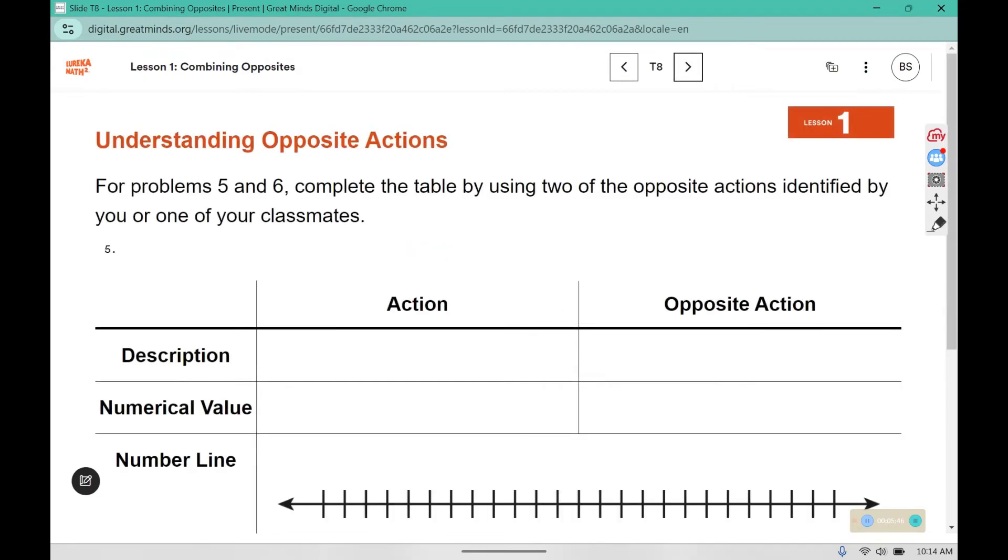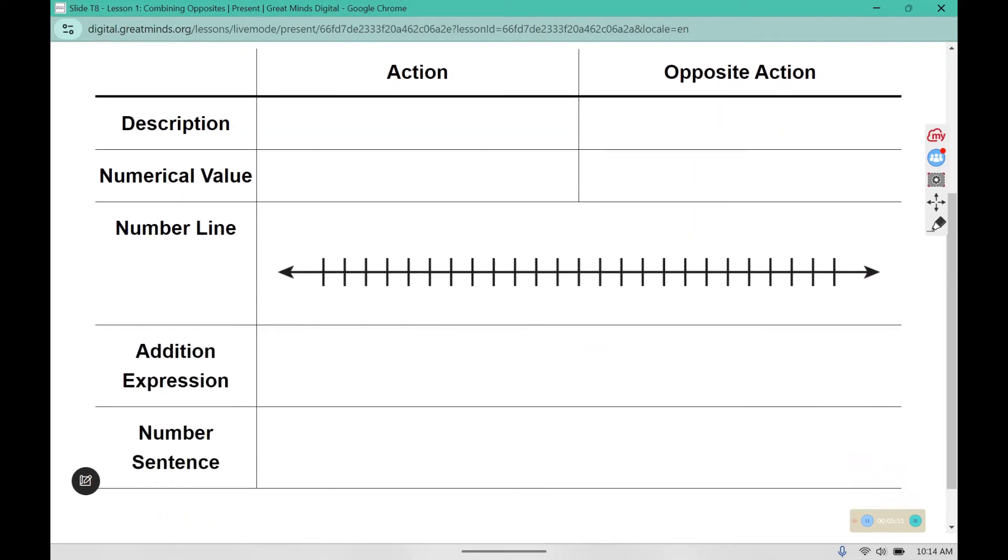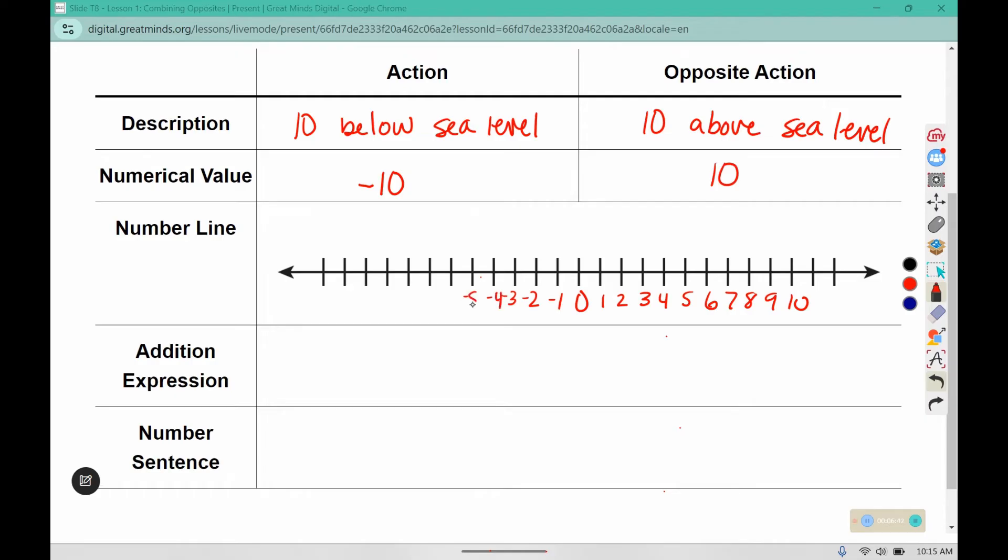For number 5 and 6, complete the table by using two of the opposite actions identified by you or one of your classmates. In number 5, I am going to create one. And then in number 6, you'll create one on your own. I am going to say that you went down under the sea. So you decrease your elevation. 10 below sea level. The opposite would be 10 above sea level. Below would be a negative and above would be a positive. We need 0 in the middle. We went below sea level. Then we came back up 10.